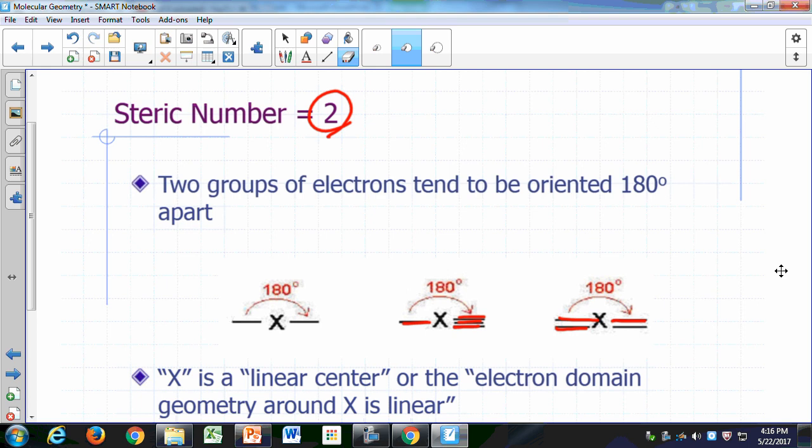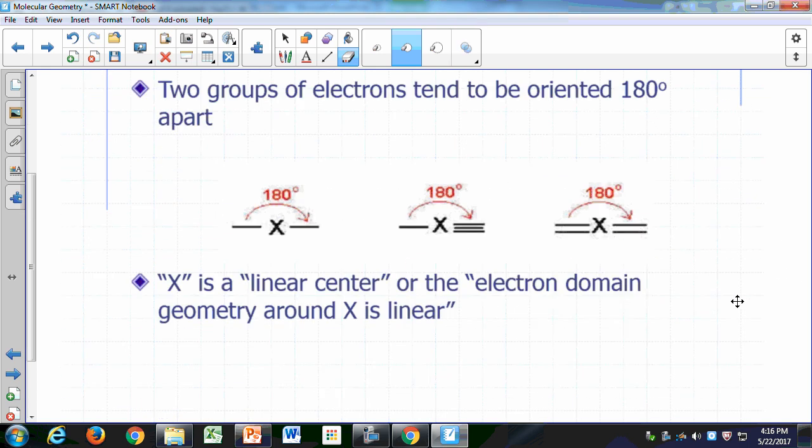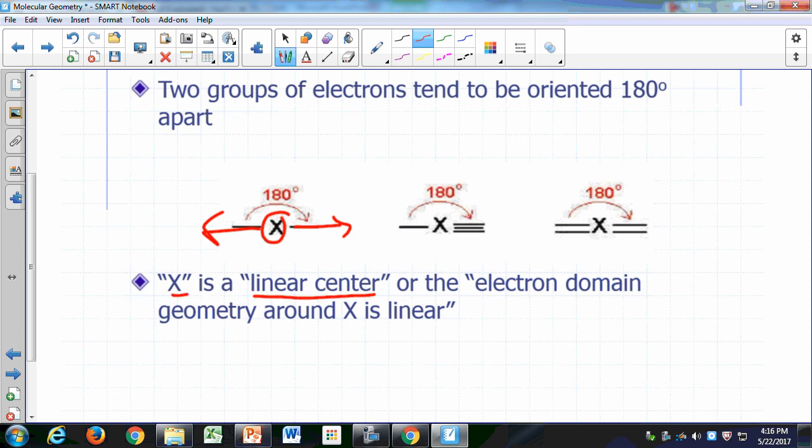So these are all different possibilities where you can have a steric number of 2. When that happens, we say because of the shape here, because there's two groups sticking out of it that are 180 degrees apart, we say x is a linear center. And we say that the electron geometry around x is linear.